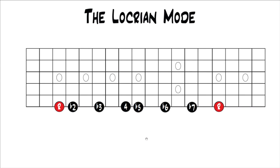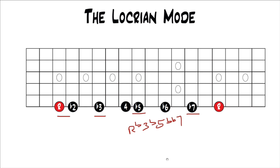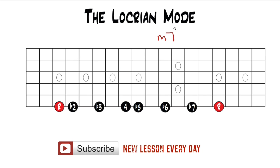What makes the Locrian mode unique from all the other modes is the flat 5. It's the only mode with the flat 5, which — as you'll remember when we built chords — gives you, with the root, flat 3, flat 5, a diminished triad. It's the only mode that builds a diminished triad; all the other modes build either major or minor. The sound you get is a very dark, half diminished sound. Half diminished means it has a flat 7 instead of a double flat 7. A diminished 7th chord — or fully diminished — is root, flat 3, flat 5, double flat 7. Half diminished is root, flat 3, flat 5, flat 7. Half diminished is the exact same as minor 7 flat 5, and that's the most common chord you're going to run across from the Locrian mode.